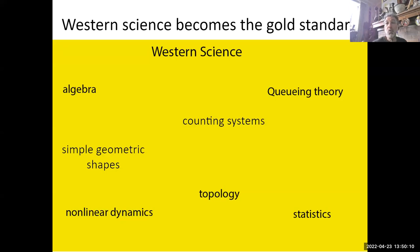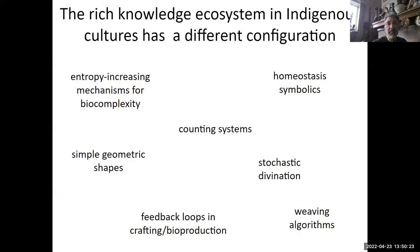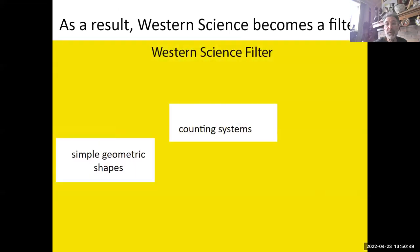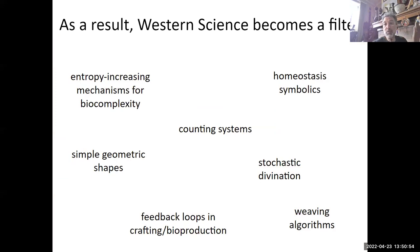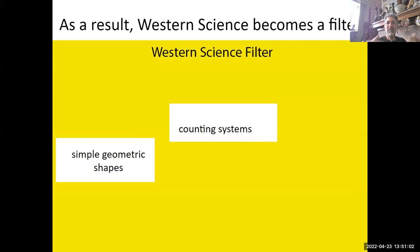Western science becomes the gold standard by which we compare all other knowledge systems, and of course it will appear superior if you're judging everything by its own standards. Indigenous cultures have rich, sophisticated mathematical and computational knowledge, but it won't map onto Western knowledge systems. As a result, Western knowledge becomes a kind of filter — you go through it and suddenly conclude that these 'primitive indigenous people' only have counting systems and simple geometric shapes.